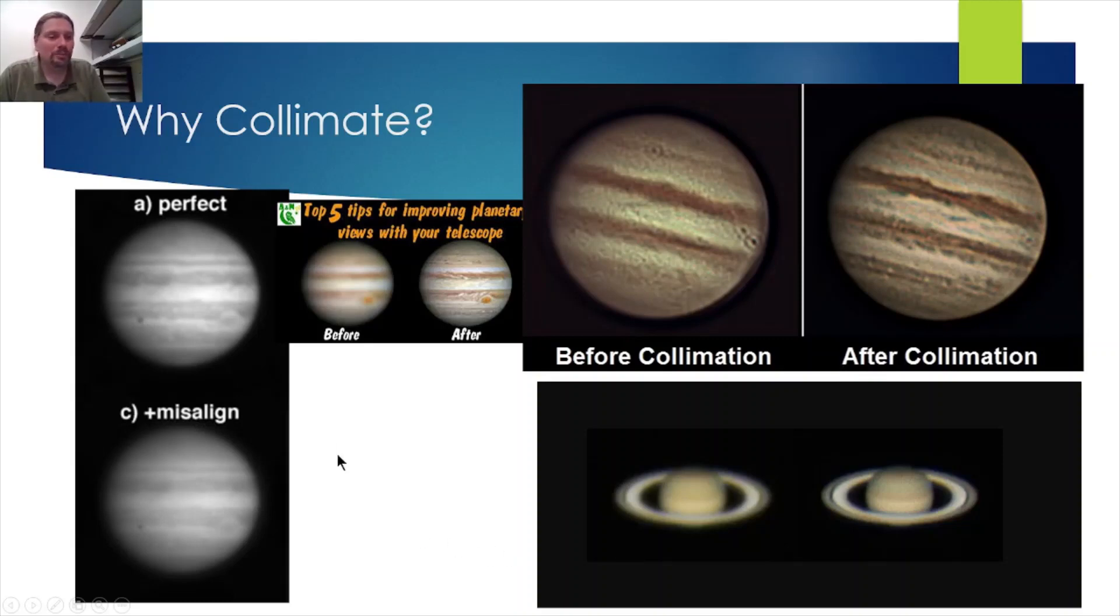Why do you want to collimate? Well, you want your optics to be as aligned as possible so you get as good an image as possible for that night. You can see when your optics are not aligned, you get blurry images as opposed to clear images.